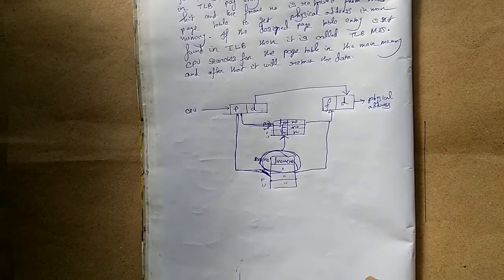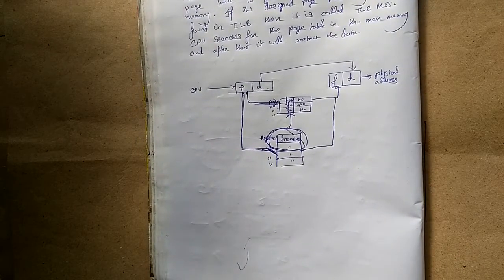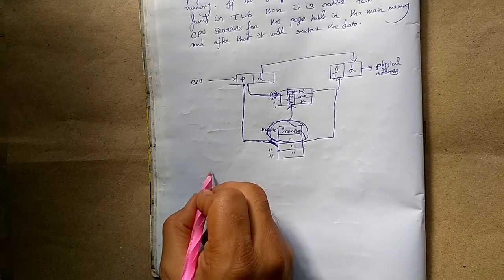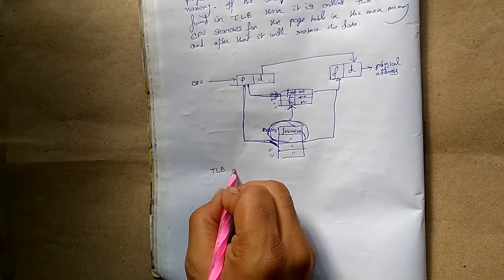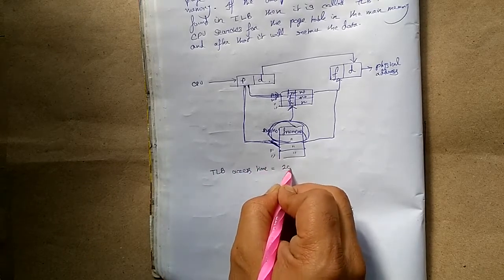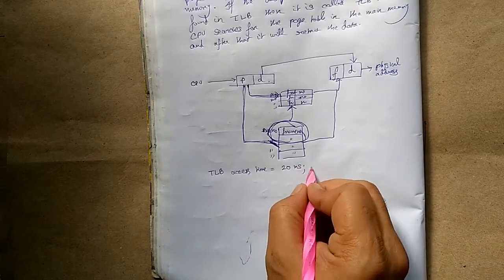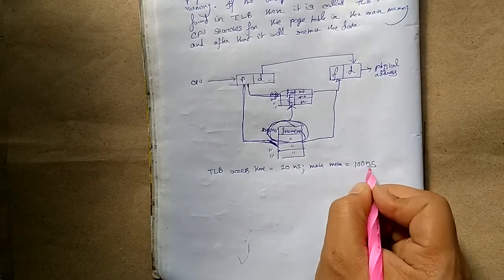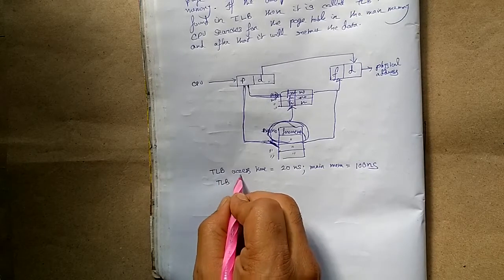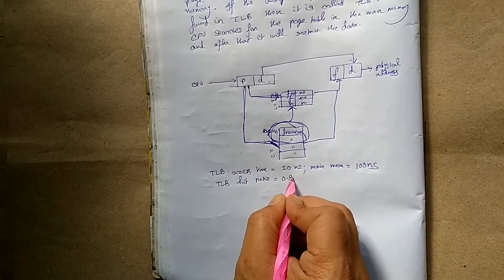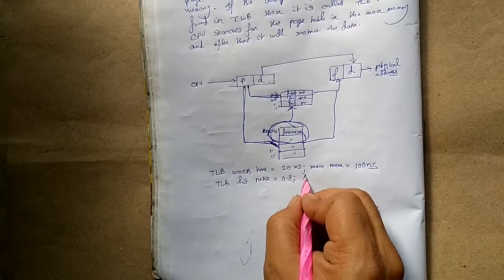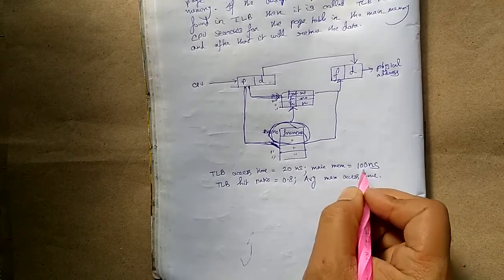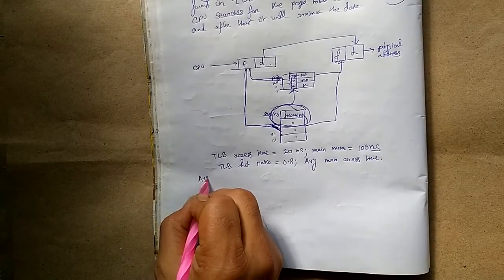Now we will see a numerical example on TLB. Given: TLB access time = 20 nanoseconds, main memory access time = 100 nanoseconds, TLB hit ratio = 0.8. We have to determine the average memory access time.